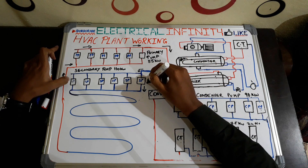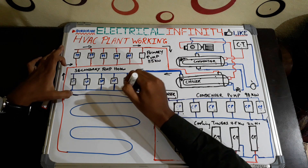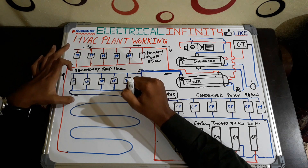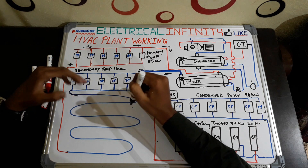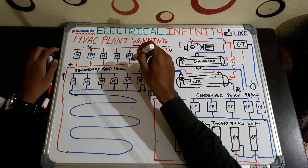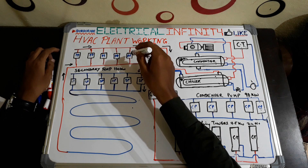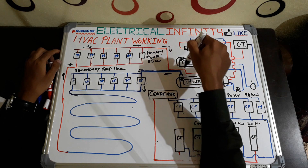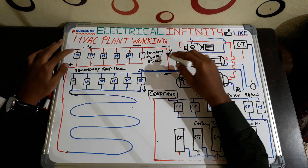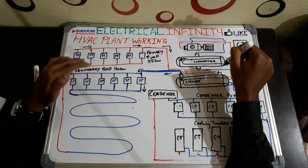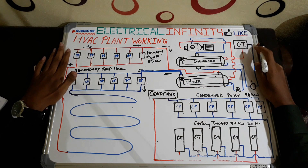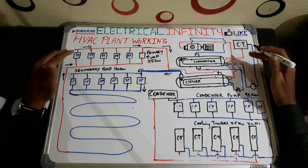The cool water from the chiller is sent to the secondary pump, which circulates it to the entire building. After cooling the building's air, the water gets heated up and is pumped by the secondary pump back to the chiller for cooling. The hot water is again cooled in the chiller and the cycle continues — this is how the HVAC plant works.